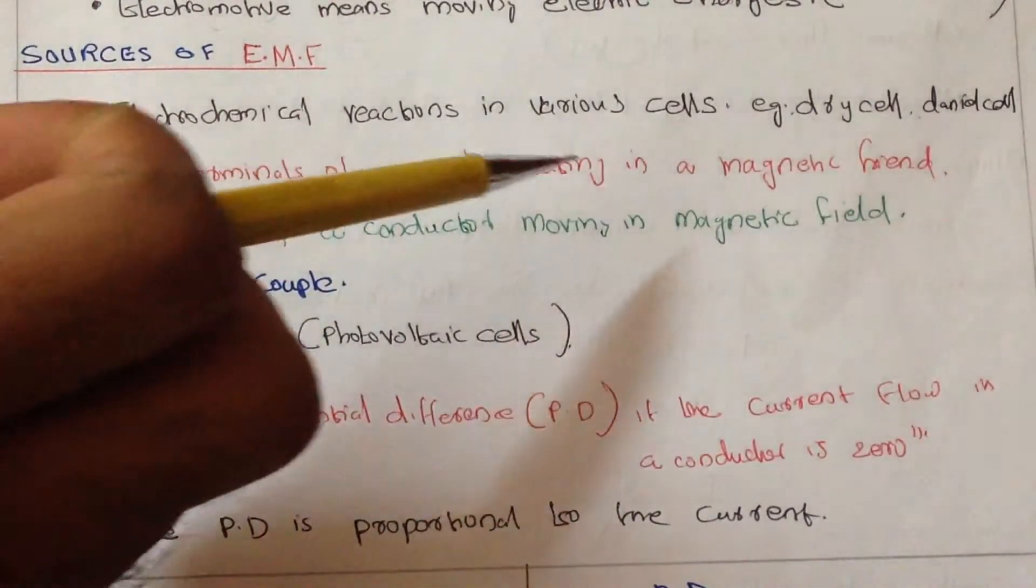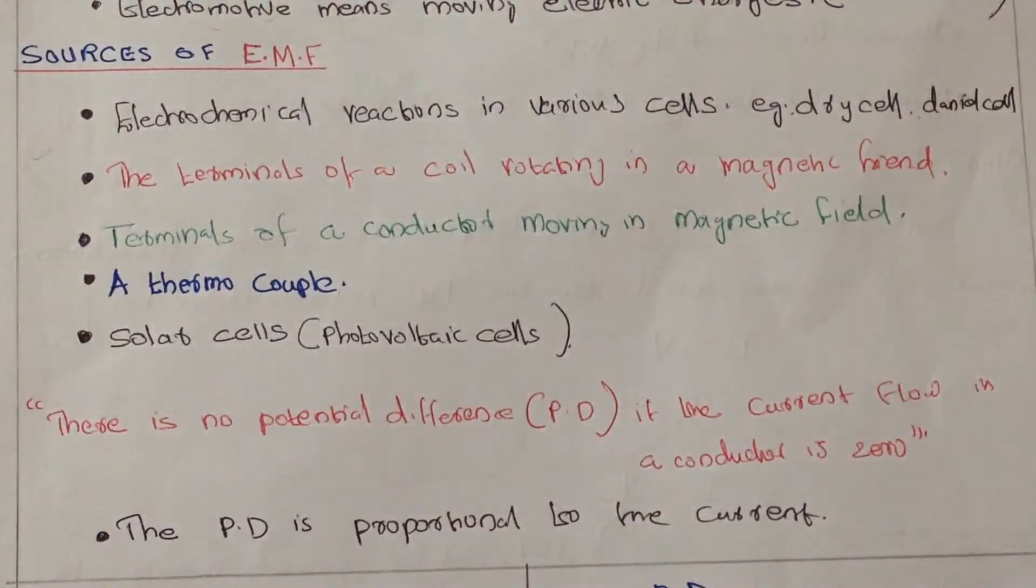Second one: the terminals of a coil rotating in a magnetic field. We already know that whenever a coil is rotating in a magnetic field, there is a tendency to cut the magnetic field and an EMF will be produced.